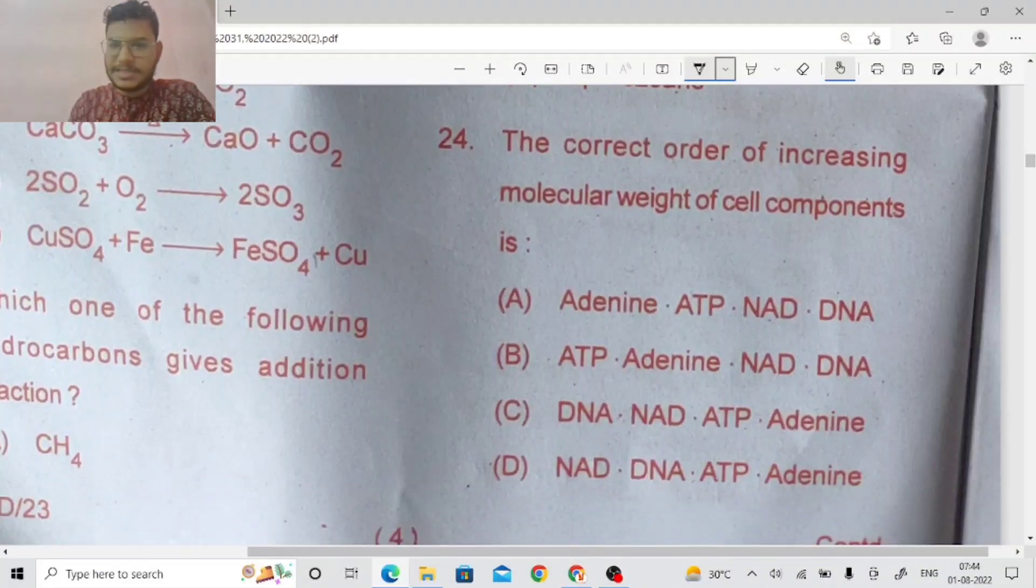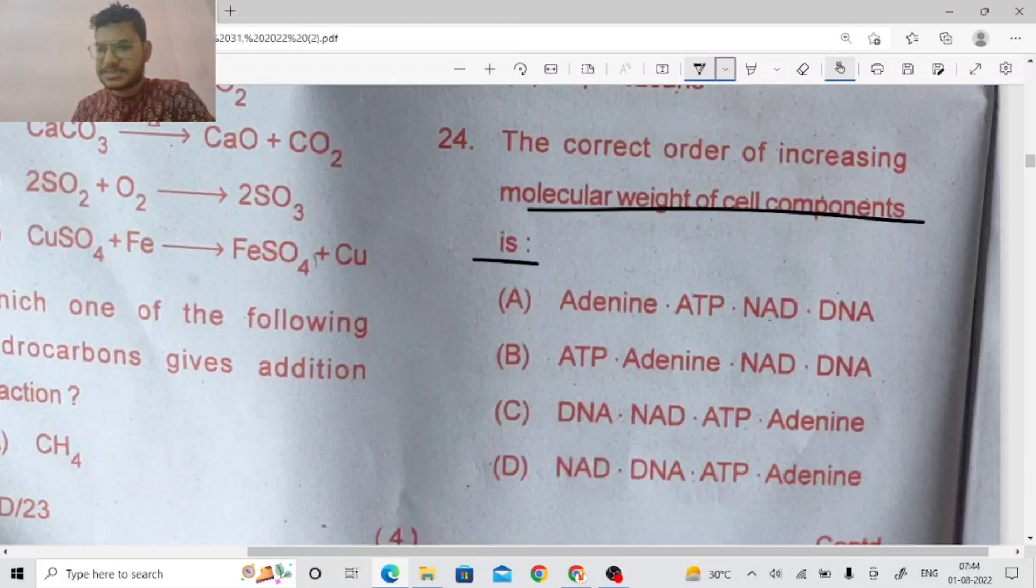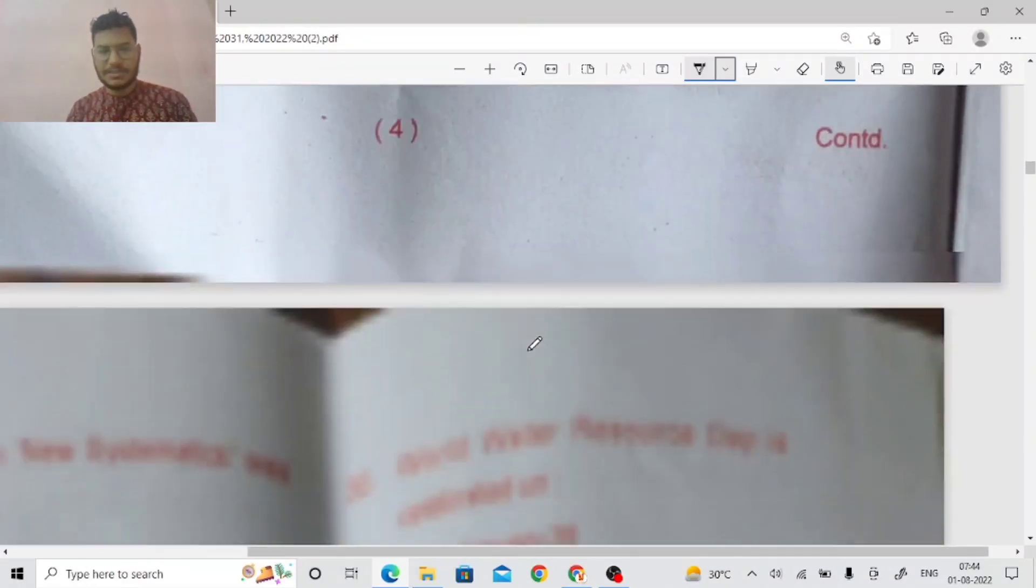Correct order of the increasing molecular weight of cell components. Increasing molecular weight of the cell component. Answer A, Adenine, then ATP, then NAD, then DNA.